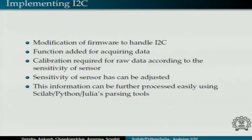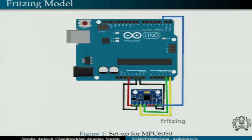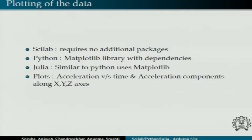Calibration can be done, and sensitivity of the sensor can also be adjusted. This is the Fritzing model. For plotting the data, Scilab requires no additional packages. Python uses matplotlib, and Julia on the lines of Python also uses matplotlib.